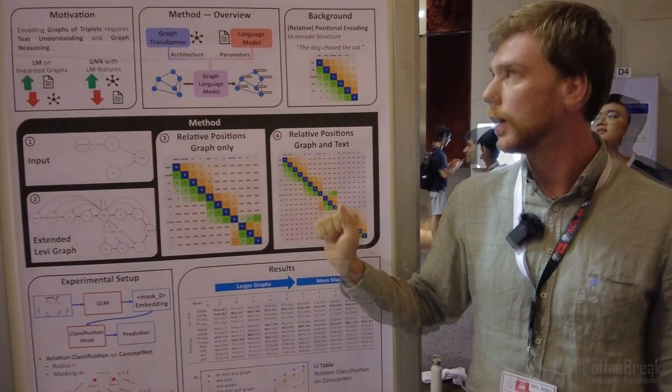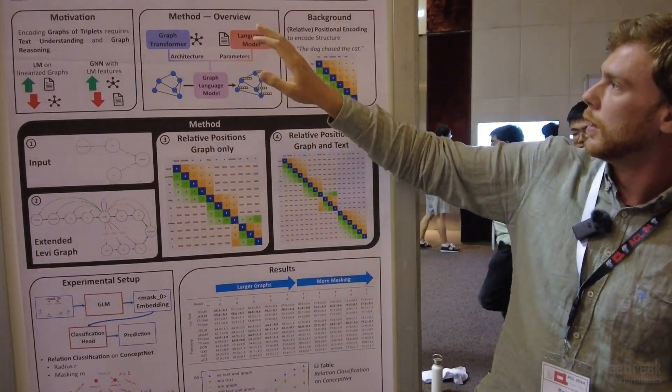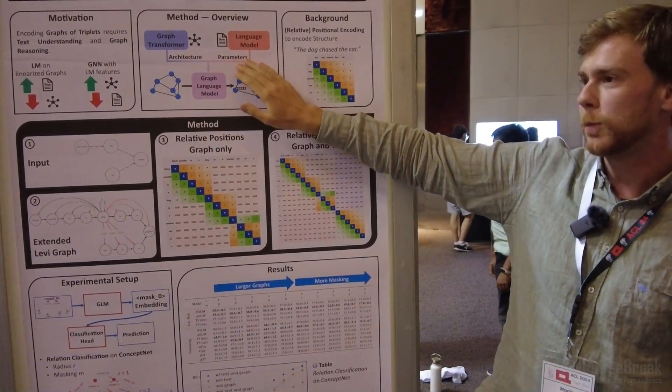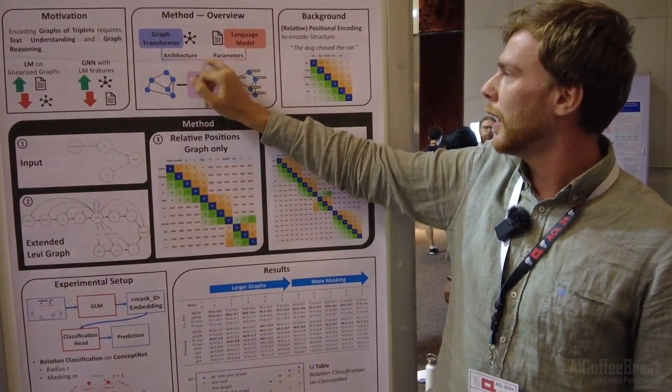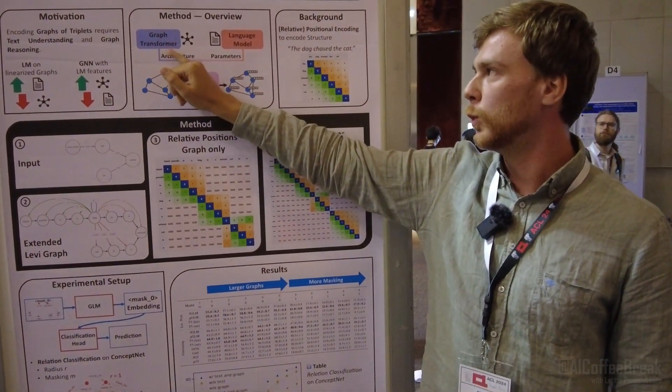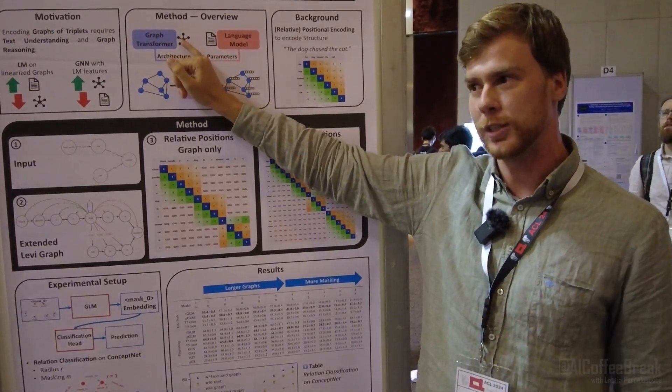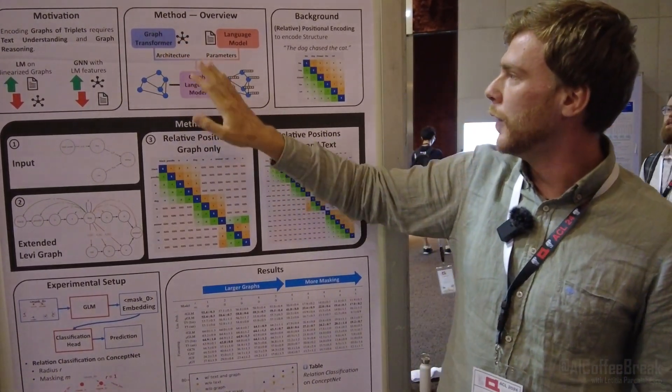The way we do that is we take a language model which has very good parameters for language understanding through all the pre-training, and we apply them to the architecture of a graph transformer, which brings the inductive bias for graph reasoning through the architecture, similar to a GNN. And this is what our graph language model is.